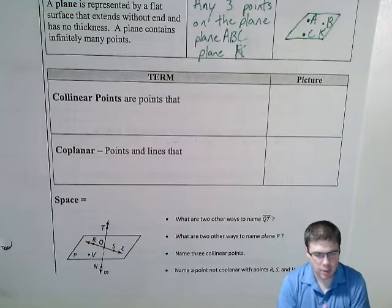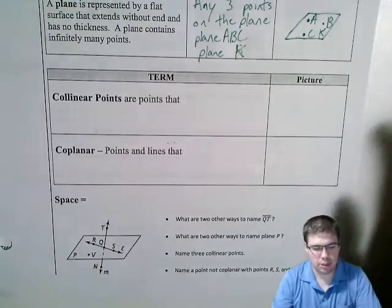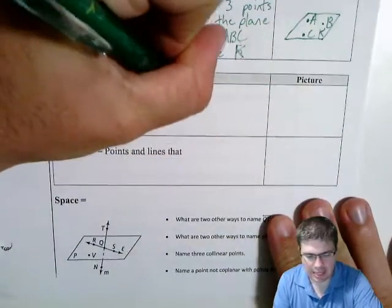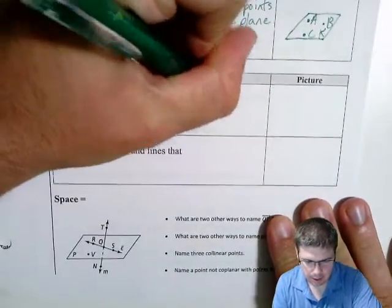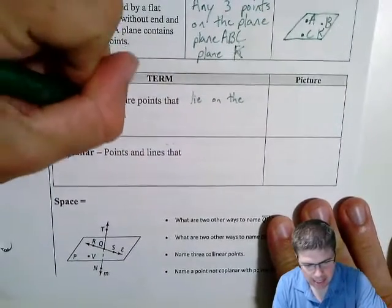All right, so next we have a couple of terms: collinear points. I already mentioned this a little bit, but those are points that lie on the same line.